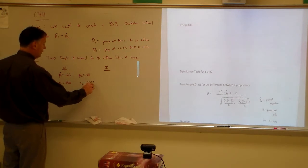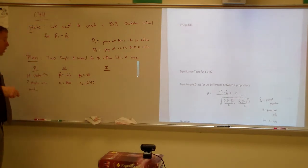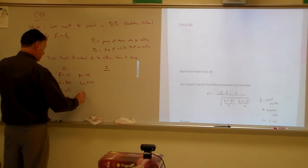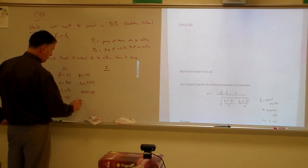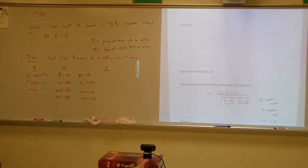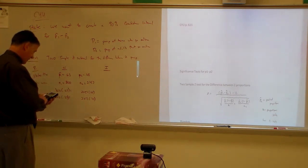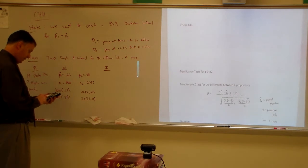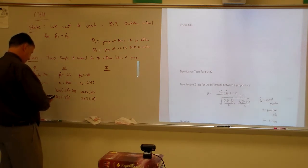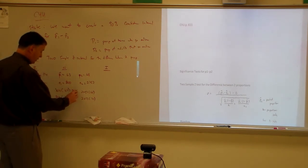800 teens and 2,253 adults. So, we're going to do N1 times P1, and N1 times 1 minus P1. And then we've got to do N2 times P2, and N2 times 1 minus P2. So, let's go to the calculator. This first one's going to be 504. And then we have 800 times 0.37, and that's going to be 296.